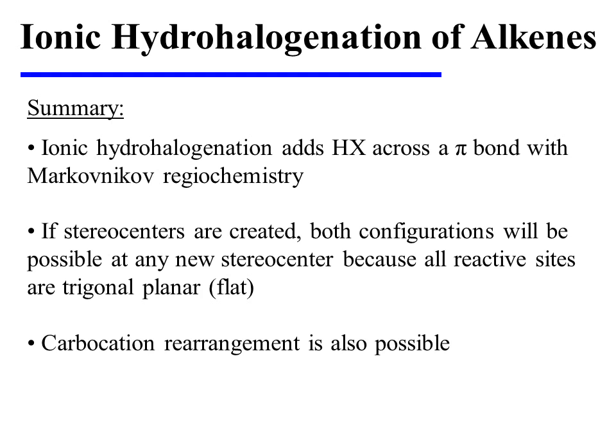In summary, ionic hydrohalogenation adds HX across a pi bond with Markovnikov regiochemistry. If stereocenters are formed during the reaction, both configurations will be produced at any new stereocenter because all of the reactive sites are trigonal planar or flat, and so the new groups may be added from either above or below. Carbocation rearrangement is also a possibility during this reaction.